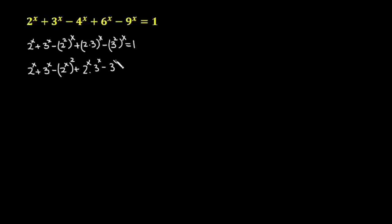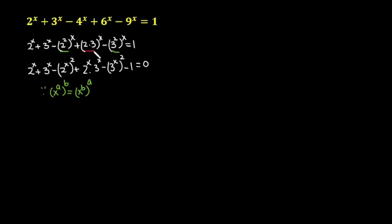Minus 3 raised to the power x, the whole raised to the power 2. Then shift the 1 to the left-hand side, so minus 1 is equal to 0. This uses the law of exponents: x raised to the power a, raised to the power b, can be written as x raised to the power b raised to the power a — I have just swapped the powers. Also, (x times y) raised to the power a equals x raised to the power a times y raised to the power a — the same rule applied here.